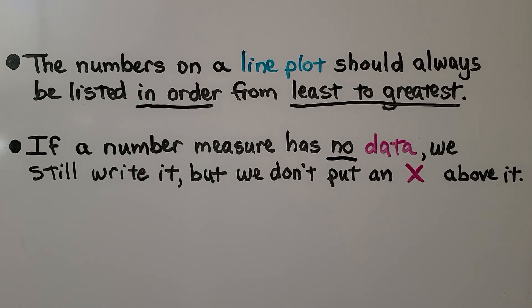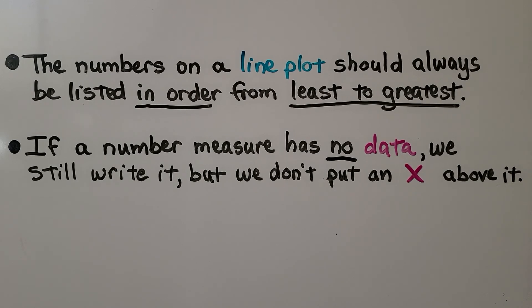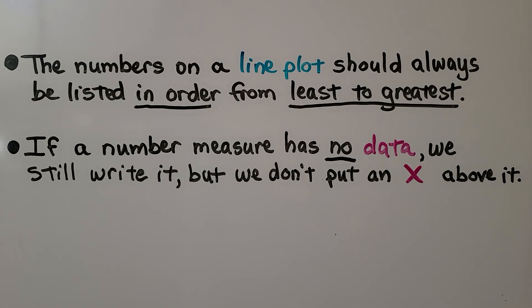The numbers on a line plot should always be listed in order from least to greatest. If a number measure has no data, we still write it, but we don't put an x above it.